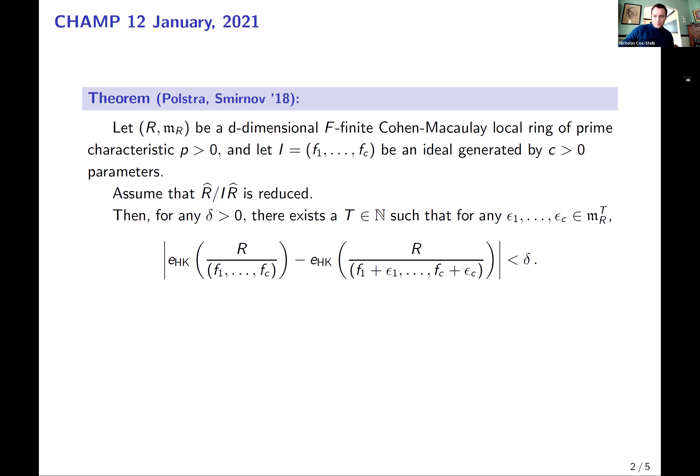It says that if R is an F-finite Cohen-Macaulay local ring and I is a parameter ideal, so it's an ideal generated by part of a system of parameters, such that after I complete and mod out by I, I get something that's reduced,